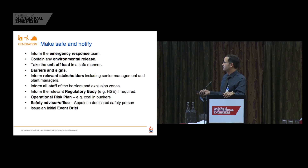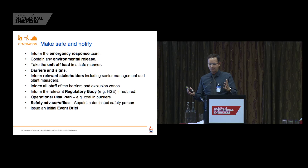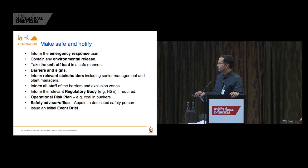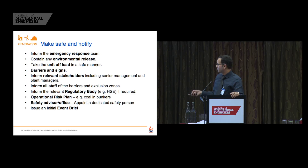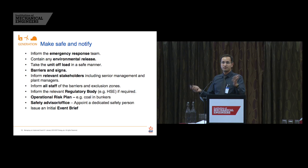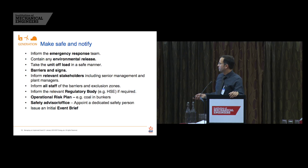Make safe: inform the emergency response team almost directly after the incident has happened. Contain any environmental releases. Take the unit offload in a safe manner. Put barriers and signs in place if necessary — at Cottam we do have some asbestos still around, so in that particular incident we had to make certain areas safe due to potential asbestos. Inform relevant stakeholders including senior management and plant managers. Inform all staff of barriers and exclusion zones. Inform regulatory bodies if required. Consider the operational risk plan — for example, if there is coal left in the bunkers. Appoint safety advisors and officers as soon as possible, and issue an initial event brief to the team.